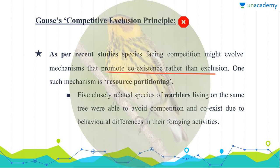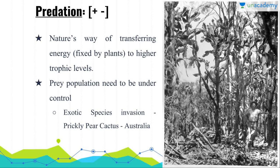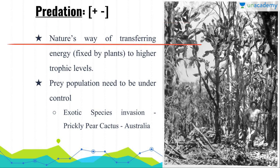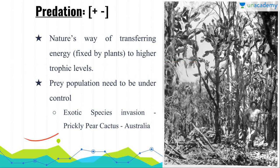In predation, one interacting species gets benefited and the other loses. In nature, predation is a very important way of transferring energy to higher trophic levels — from primary producers to tertiary consumers.